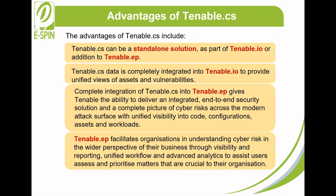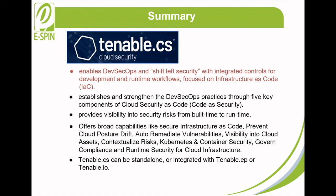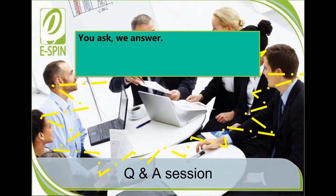In summary, Tenable CS enables DevSecOps and Shift-Left security with integrated controls for development and runtime workflows focused on infrastructure as code. Tenable CS establishes and strengthens DevSecOps practices through five key components of cloud security as code. It provides visibility into security risk from build time to run time, and offers broad capabilities like secure infrastructure as code, prevent cloud posture drift, auto-remediate vulnerabilities, visibility into cloud assets, conceptualize risk, Kubernetes and container security, governance compliance, and runtime security for cloud infrastructure. Advantageously, Tenable CS can be standalone or integrated with Tenable EP or Tenable.IO.